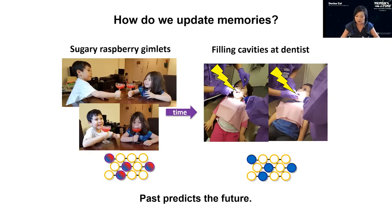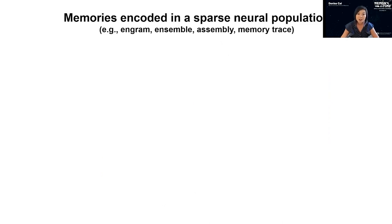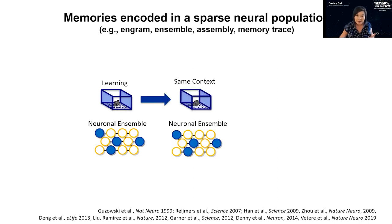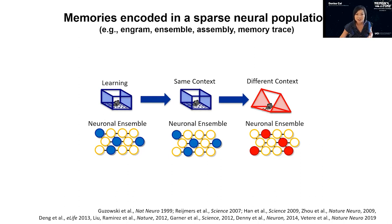Let's go back to the beginning — what do we know about how memories are encoded? A number of studies, many done with faculty here — John Guzowski along with Bruce McNaughton — were some of the first to characterize that memories are stored in sparse neural ensembles. After contextual or spatial learning, memories were encoded in sparse neural ensembles in the hippocampus. When animals were brought back, many of the same cells were reactivated during recall, and in different contexts, different cells were reactivated, suggesting different memories are encoded in different ensembles.